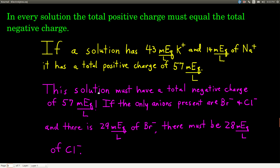In every solution, the total positive charge must equal the total negative charge. For example, if a solution has 43 milliequivalents per liter of potassium ion and 14 milliequivalents per liter of sodium ion, that's 57 milliequivalents per liter of positive charge, so there must also be 57 milliequivalents per liter of negative charge. If there are only two anions present — bromide and chloride — and bromide is 29 milliequivalents per liter, then chloride must be 57 minus 29, which equals 28 milliequivalents per liter. Charge has to balance.